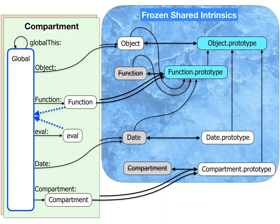In doing all this, we're introducing the compartment abstraction itself. The compartment constructor, like the Function constructor, has to be per compartment. The Function constructor has to be per compartment because each compartment has its own evaluators that evaluate in its own global object. The compartment constructor also has to be per compartment because of a mapping relationship in the import namespace among compartments, which we'll get back to at the end. All compartment constructors share the same compartment prototype, and all compartment instances inherit from that same compartment prototype.